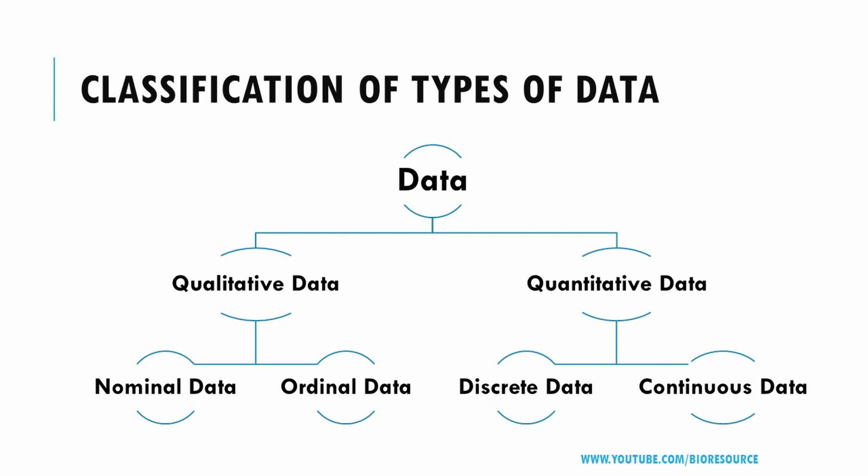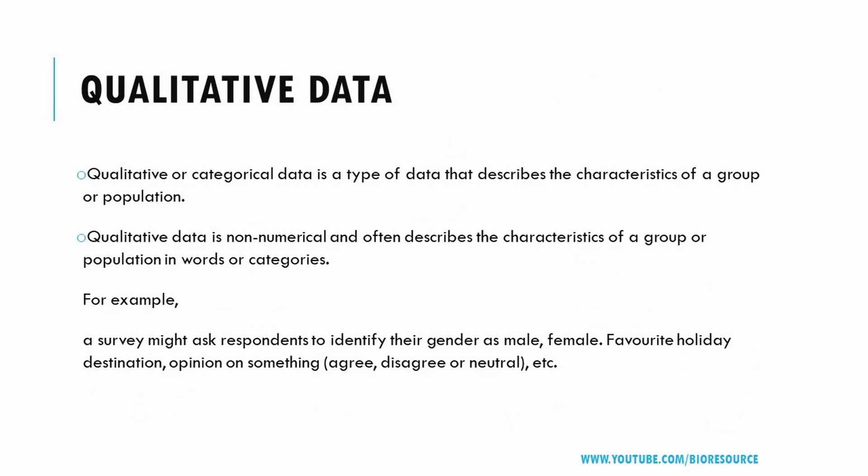Here is the overview of the classification of different types of data — qualitative data and quantitative data — further divided into nominal data, ordinal data, discrete data, and continuous data. So what is qualitative data?